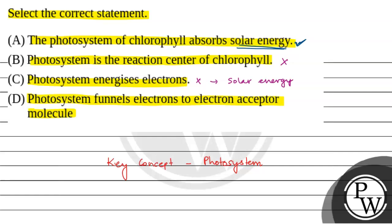First statement is correct. Photosystem funnels electrons to electron acceptor molecule. So photosystem funnels electrons and then passes them to the reaction center. So this is also incorrect.